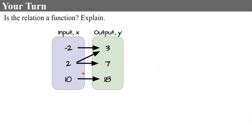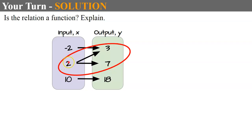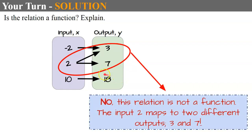Here's another one for you. Please pause, determine if it's a function, and come back and hit play when you're ready. Welcome back. Looking at this input 2, which maps to 3 and also maps to 7 — therefore, no, this relation is not a function. The input 2 maps to two different outputs, 3 and 7.